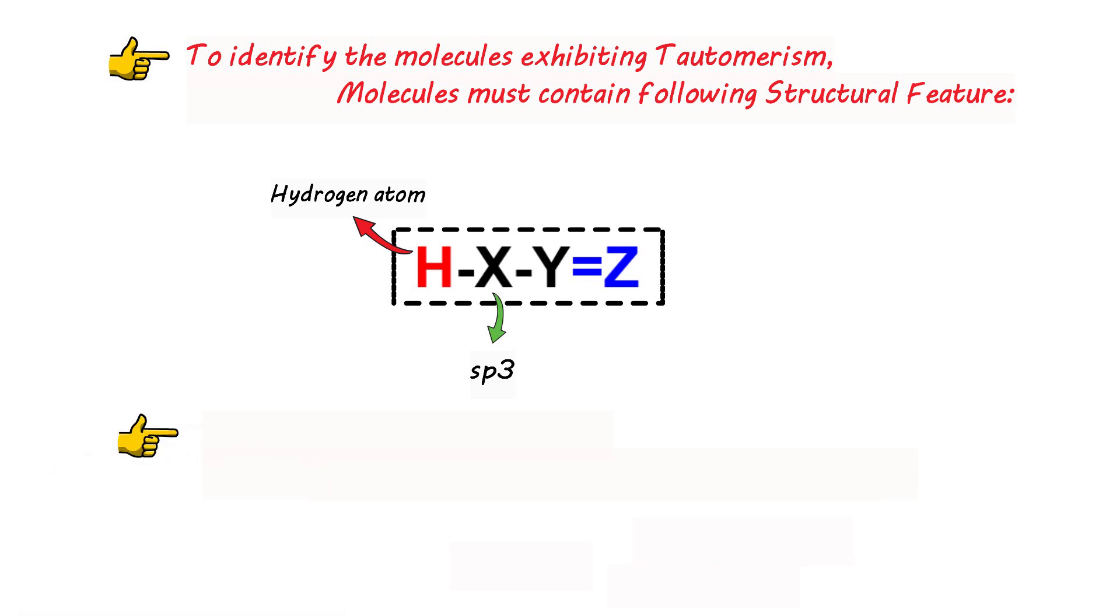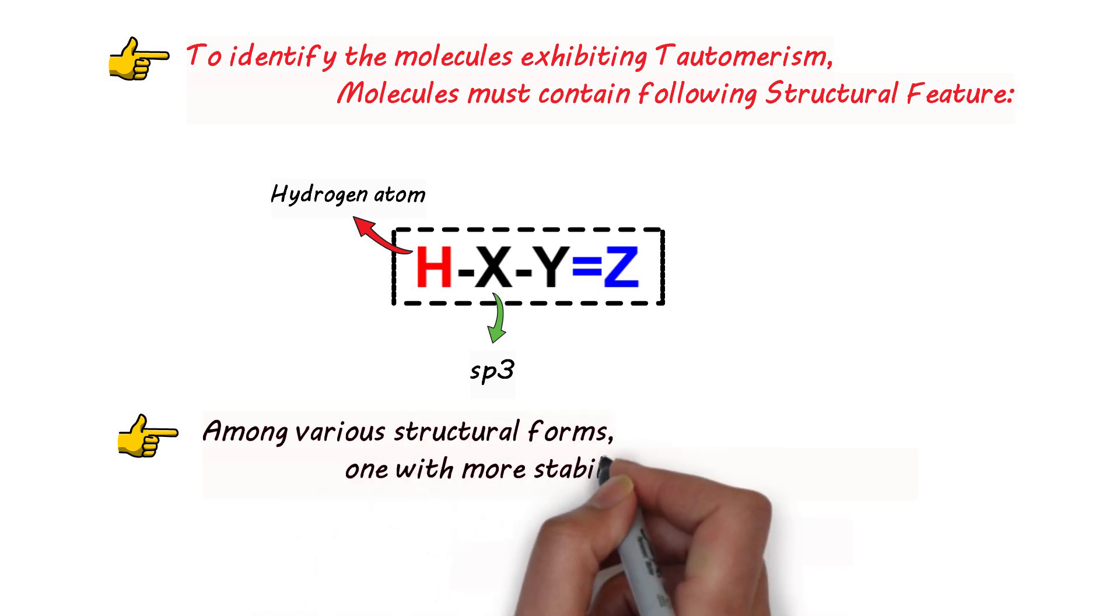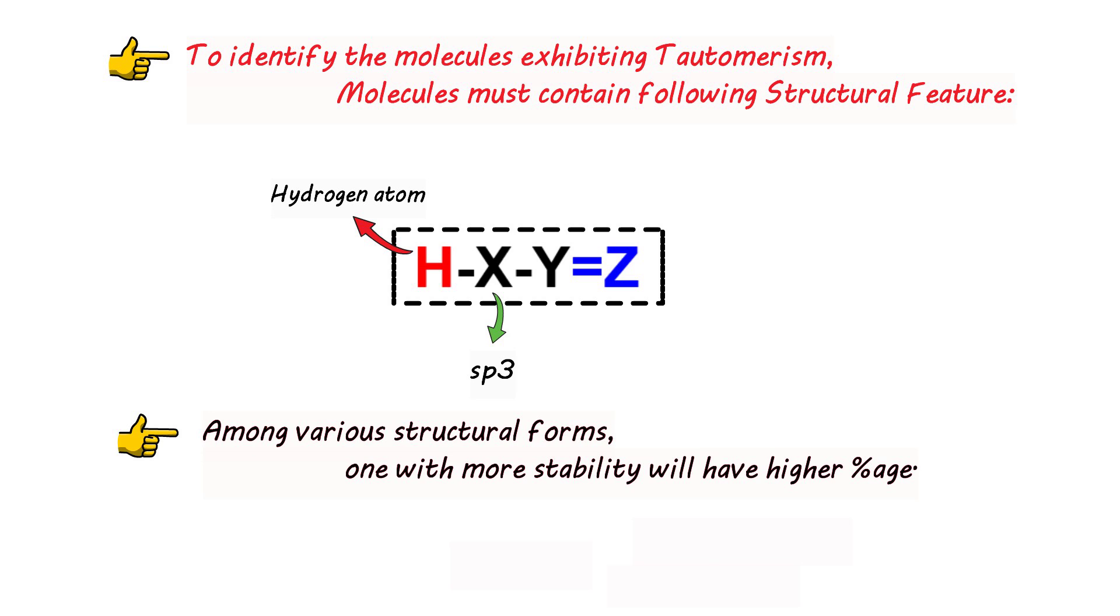Now among the various structural forms that can exist, one with more stability will have higher percentage. That stability can be assessed by the presence of conjugation in the system, by the development of aromatic character, or by the presence of hydrogen bonding in that system. This could be illustrated with certain examples.